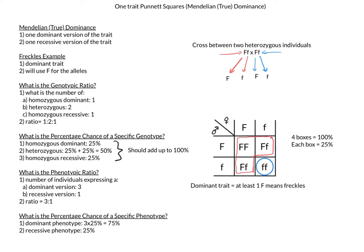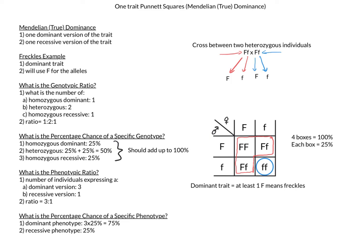Now let's go ahead and try and reset. We are still going to be looking at freckles, but we are going to be having a different set appearance to make the cross turn out a little bit less perfect in a sense. Let's say we have a cross between a homozygous dominant, big F, big F, and heterozygous individual, big F, little f.